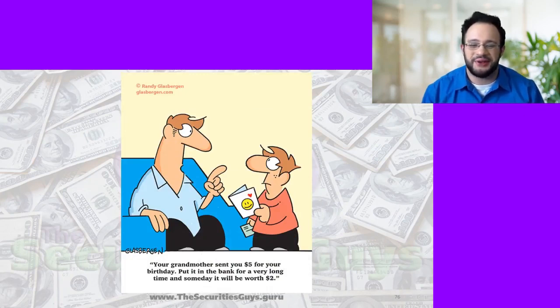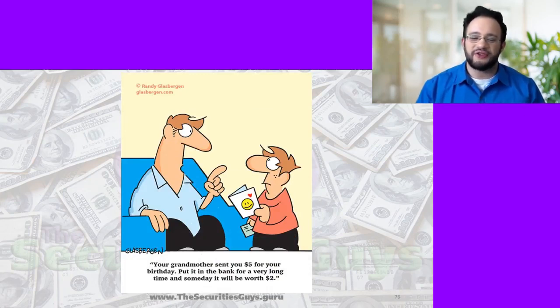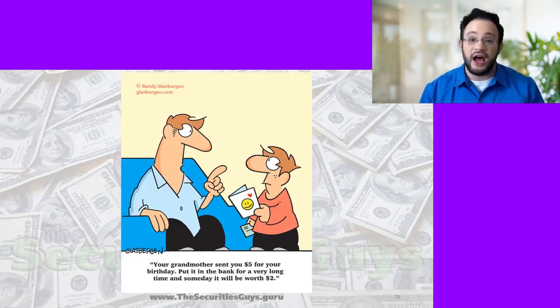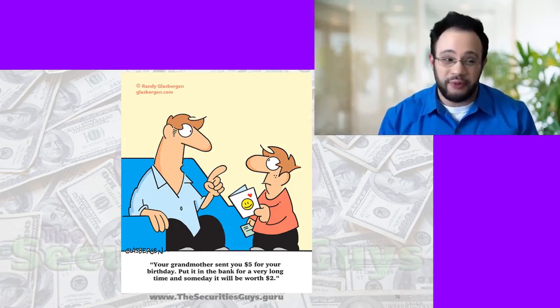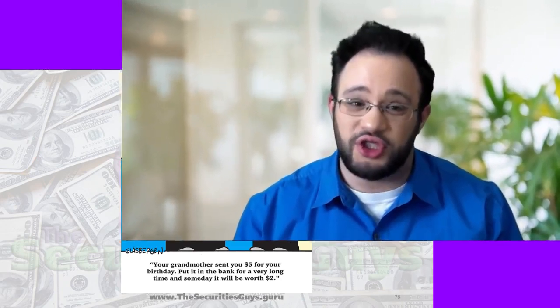I've always loved this cartoon — your grandmother sent you $5 for your birthday, you put it in the bank, wait a very long time, and someday it'll be worth $2. That brings us to the end of this first unit on Associated Persons. We'll get more into it in the next unit, so I recommend watching that shortly. Hope you enjoyed this.